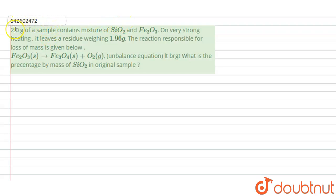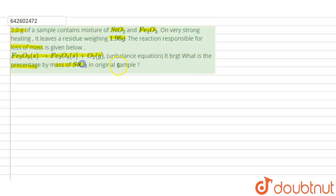The question says: 2 grams of a sample contains a mixture of silica and Fe2O3. On very strong heating, it leaves a residue weighing 1.96 grams. The reaction responsible for the loss of mass is Fe2O3 (solid) changing to Fe3O4 (solid) and O2 (gaseous). What is the percent by mass of silica present in the original sample?